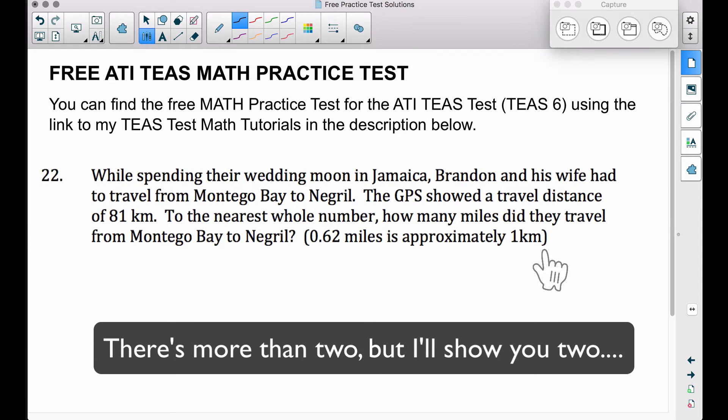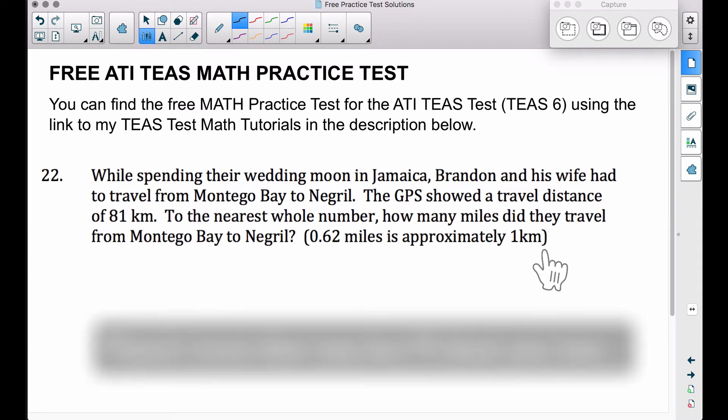Two ways we can do it. One way, classic way is a proportion. So I'm taking this conversion here, 0.62 miles is the same thing as one kilometer, approximately. Since this distance here is kilometers, I'm going to put that over here on the kilometer side and we want to figure out to the nearest whole number how many miles we have, x miles. From here, we just cross multiply and divide just like any other proportion.